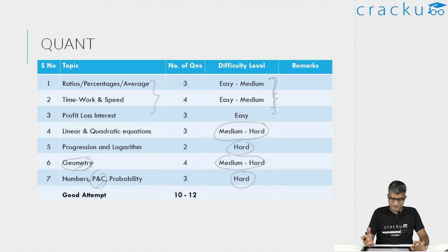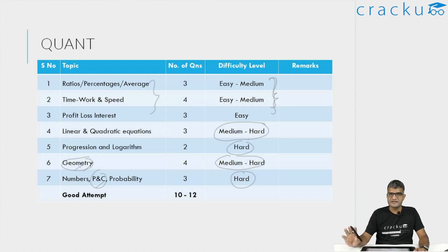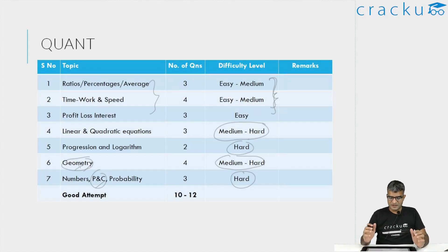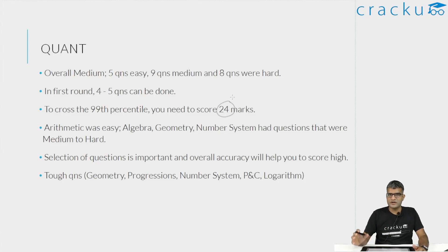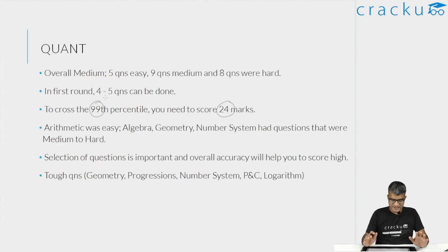Overall, this is a difficult quant section — probably as difficult as CAT 2023. Anyone scoring around 24 marks — getting 8 questions correct — would be on the verge of 99 percentile. Getting 9 or 10 correct would be exceptional. That is as far as Dashcat 7 is concerned.